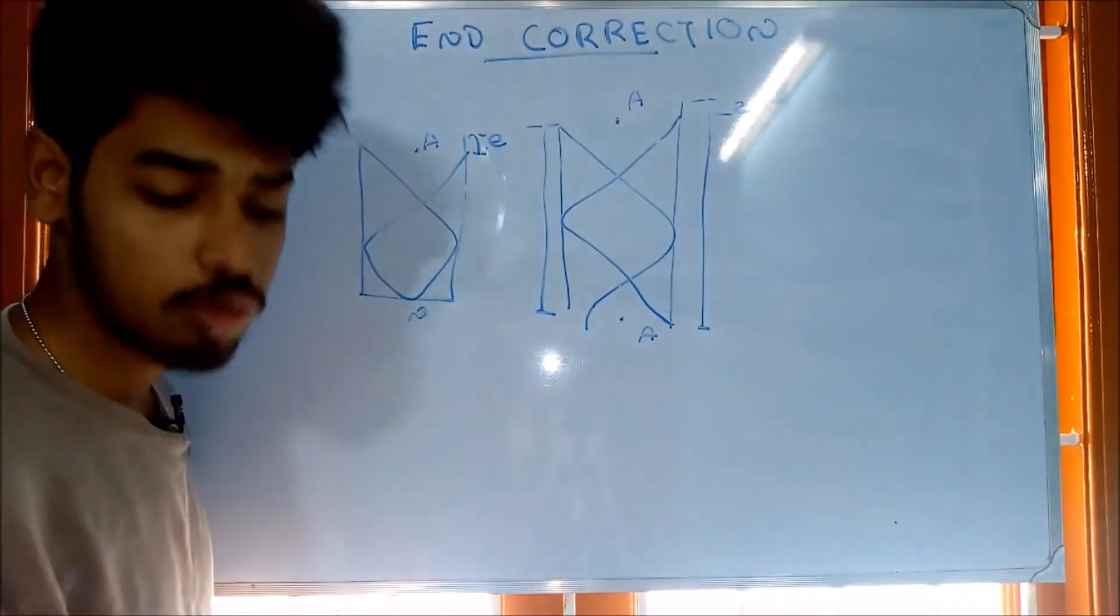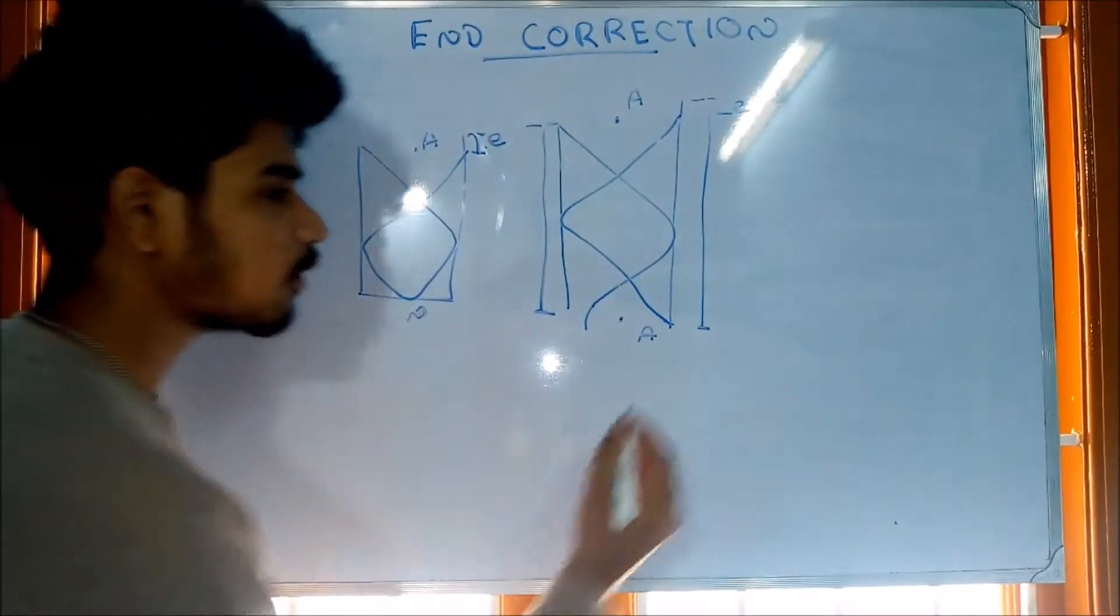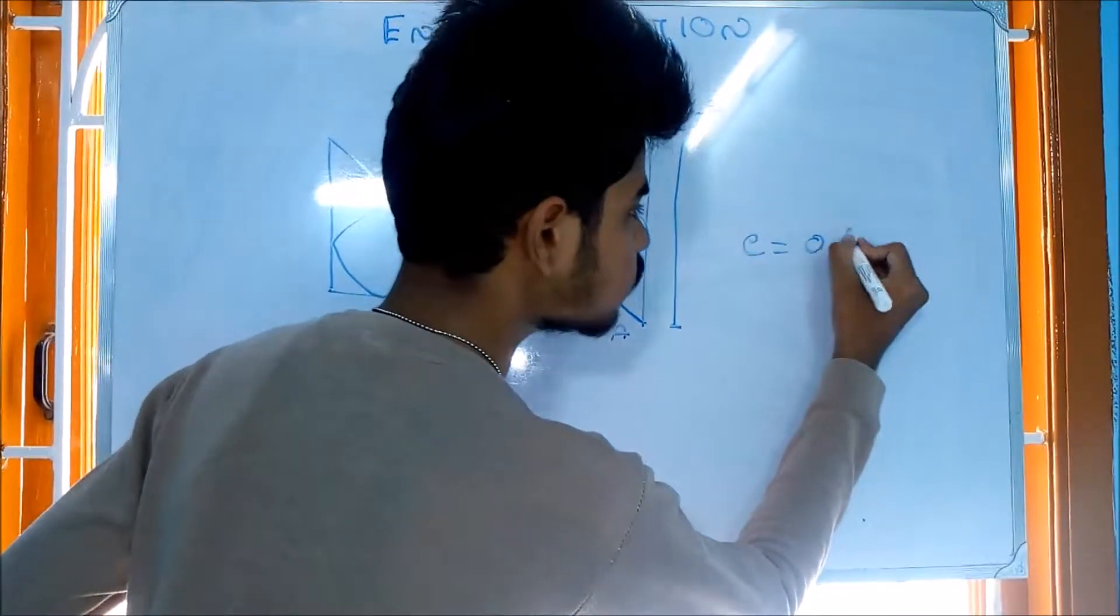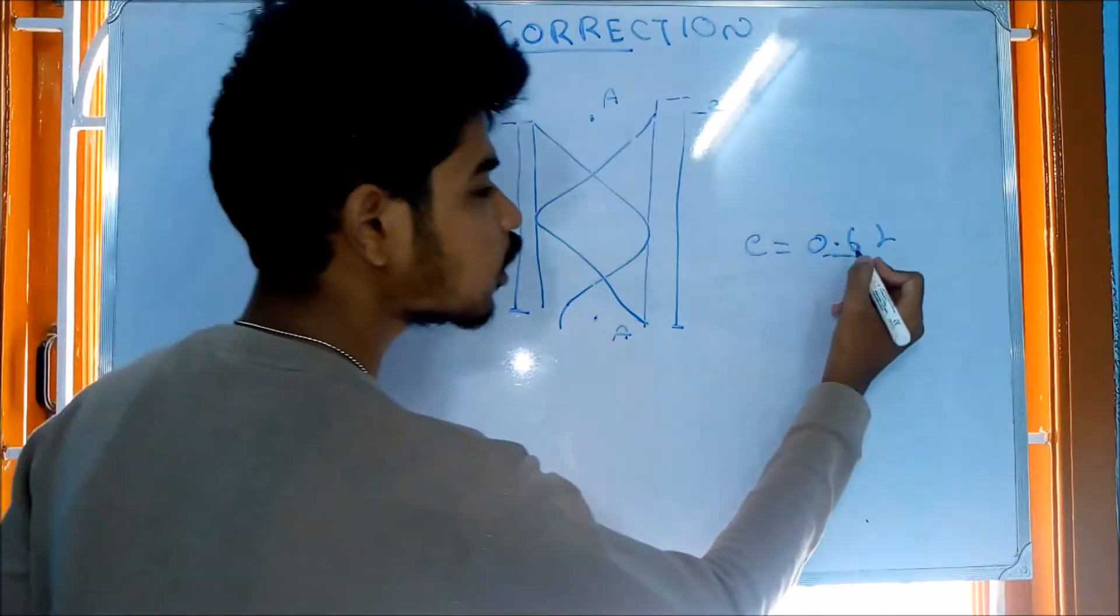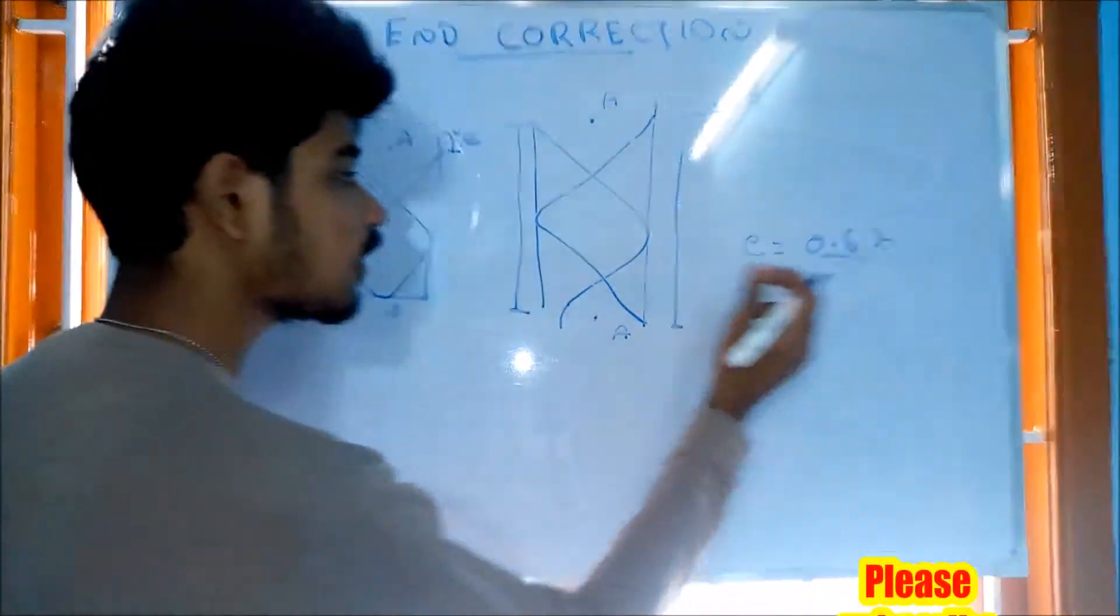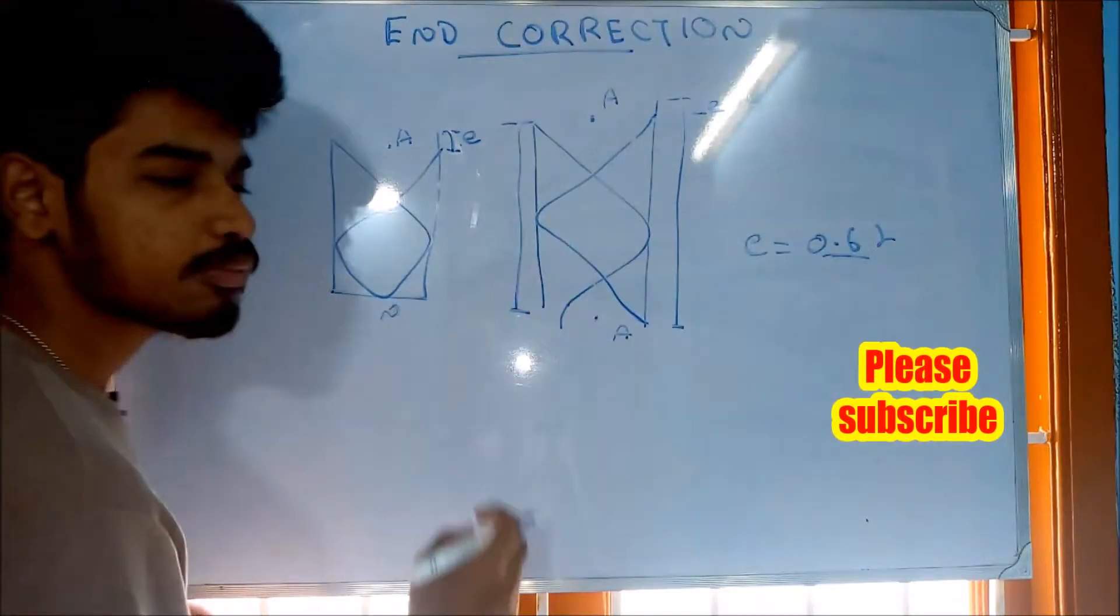How do we get the E? What is the E? It is 0.6R. I will show you that. The R is the radius of this wire for the open and closed pipe.